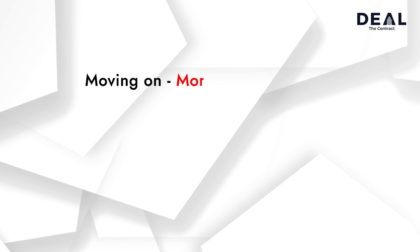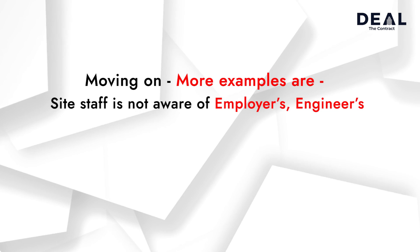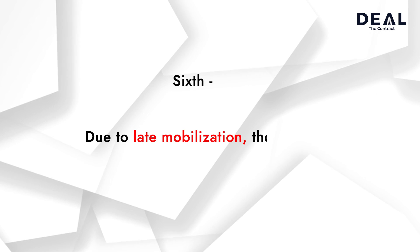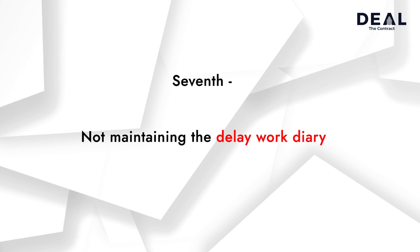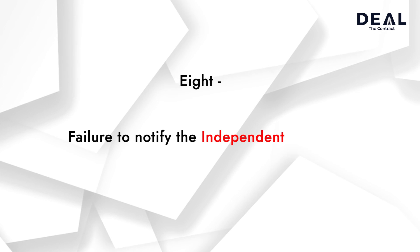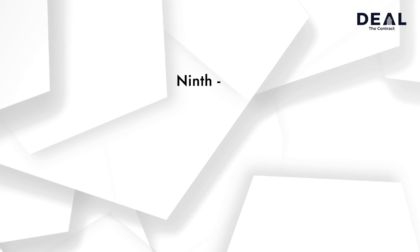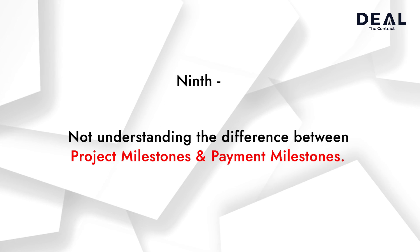More examples are: 5) site staff is not aware of employer's, engineer's, and contractor's duties to maintain good relationship with the client; 6) due to late mobilization by the contractor, there is a time and cost overrun attributable to the contractor; 7) not maintaining the delay work diary as a part of daily works diary; 8) failure to notify the independent engineer or authority engineer for change of scope or variations in time; 9) not understanding the difference between project milestones and payment milestones.